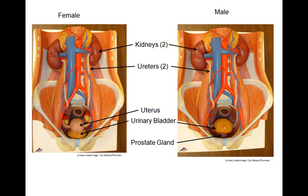The female and male urinary systems are somewhat different from one another. First, take a look at the female urinary bladder housed in the pelvic cavity. Sitting superior to the urinary bladder is the uterus. This explains the urgency for pregnant women to eliminate their urinary bladders as it fills with urine, because as the uterus enlarges with fetal development, pressure is exerted on the urinary bladder.